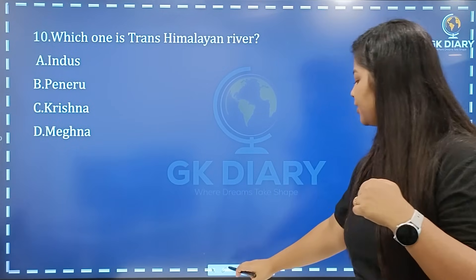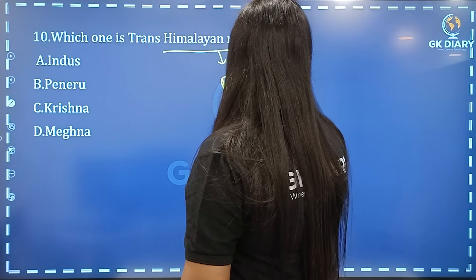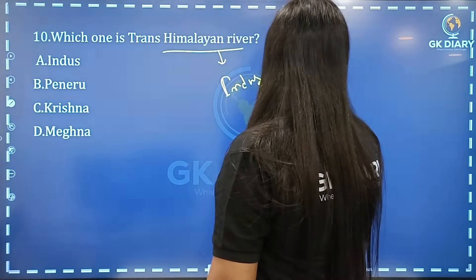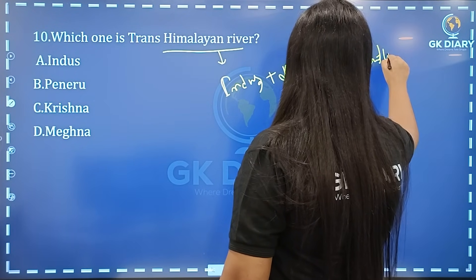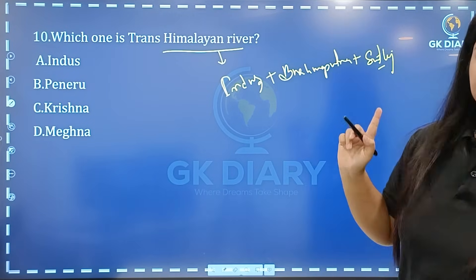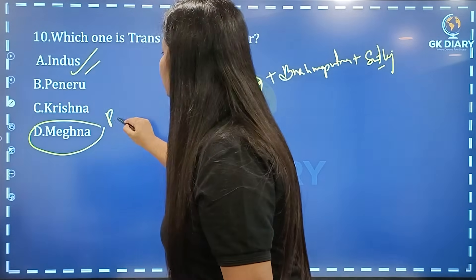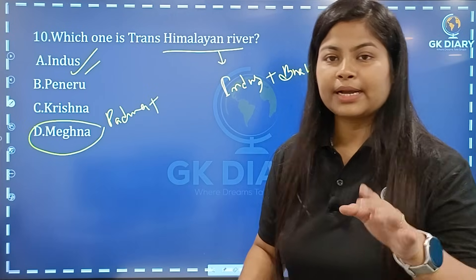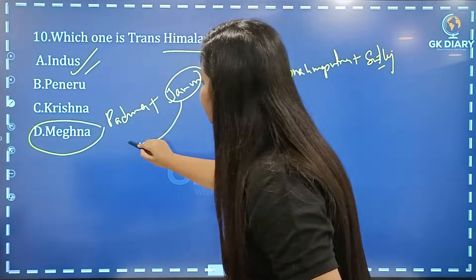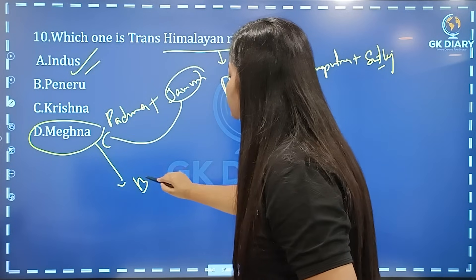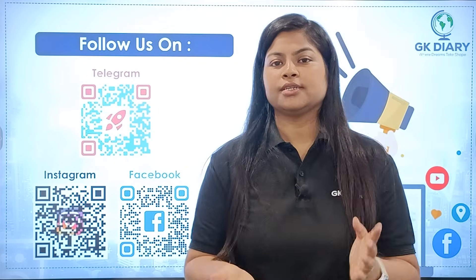Which one is the Trans-Himalayan River? Trans-Himalayan Rivers include Indus and Brahmaputra. Indus is the correct option. The Bay of Bengal — we have 10 minutes to complete the questions.